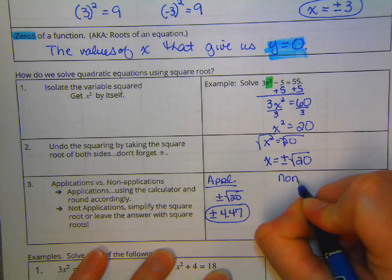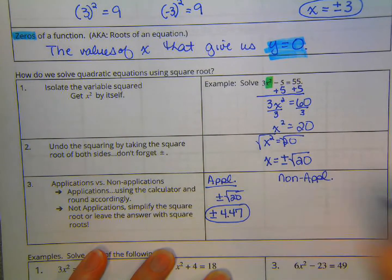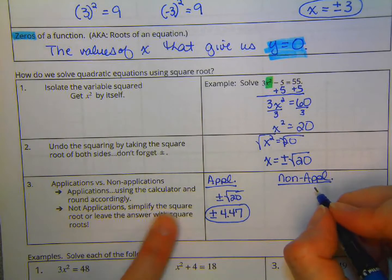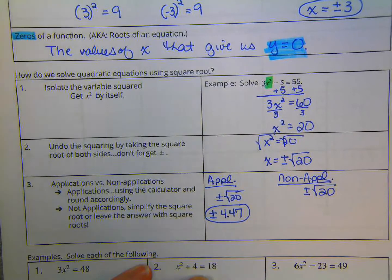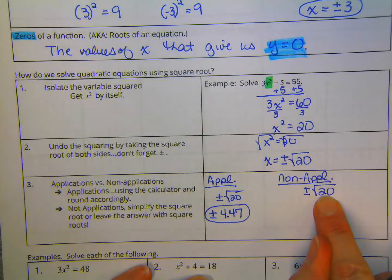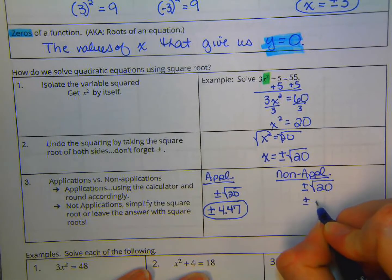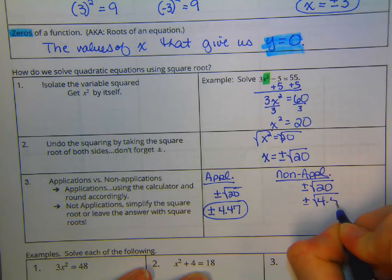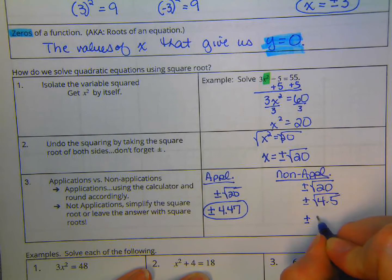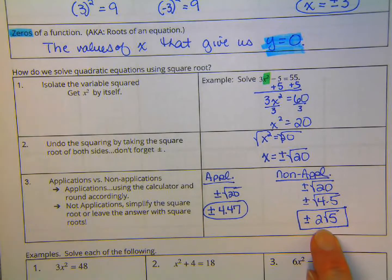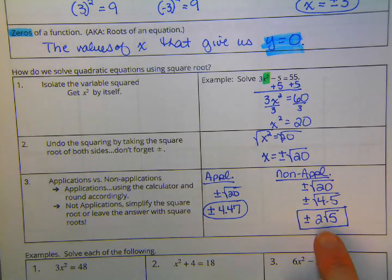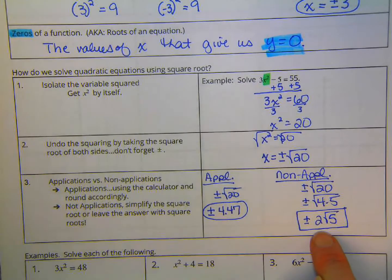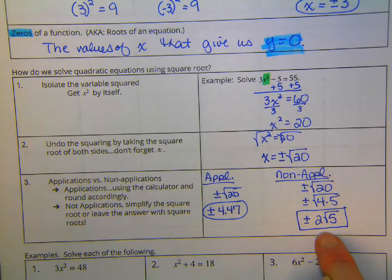And if it's not an application, then we want to go ahead and simplify the square root. So we've got plus or minus the square root of 20. This was the last lesson that you did. What's the biggest perfect square that divides 20? It's 4. And what's the square root of 4? It is 2. So that is our answer. It's important to be able to do this. You will use this quite a bit in geometry with special right triangles, Pythagorean theorem, and other things.